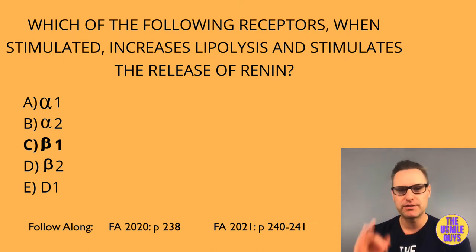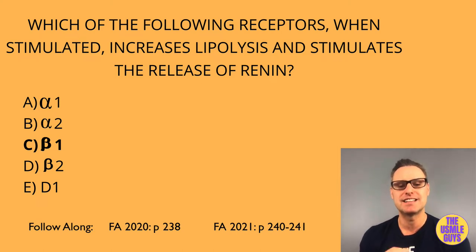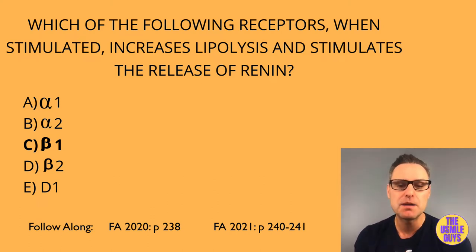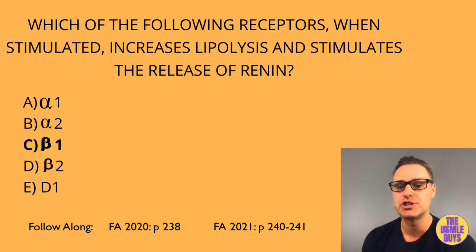The GI protein — think inhibitory — inhibits the cyclic AMP-dependent pathway by inhibiting adenylyl cyclase activity, resulting in the opposite effect of the GS subunit.